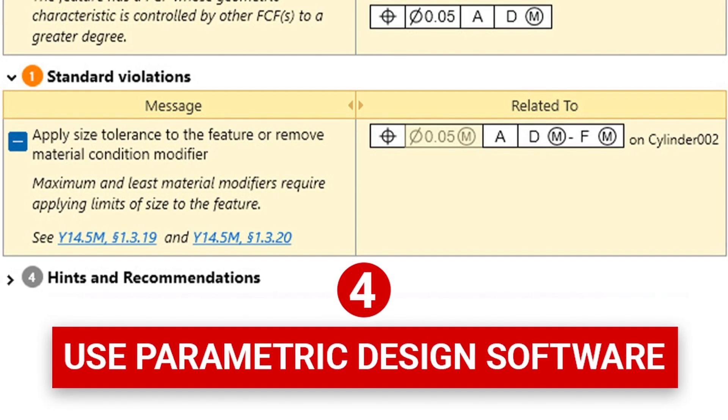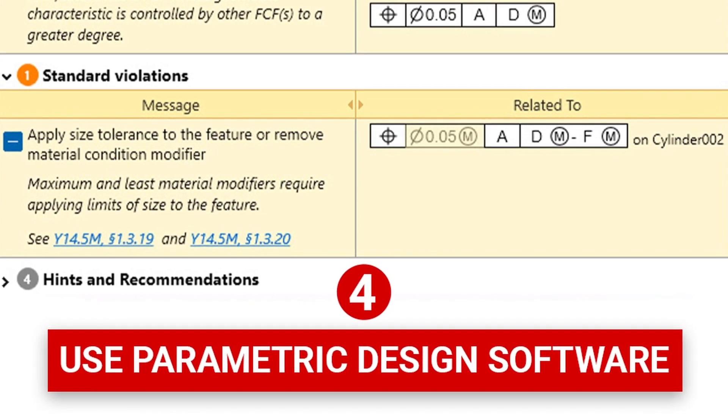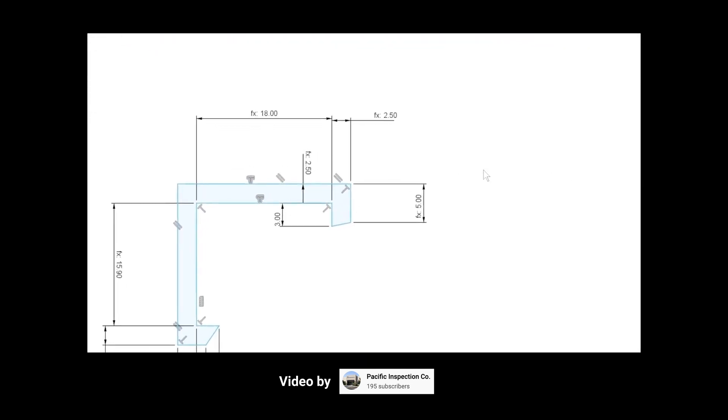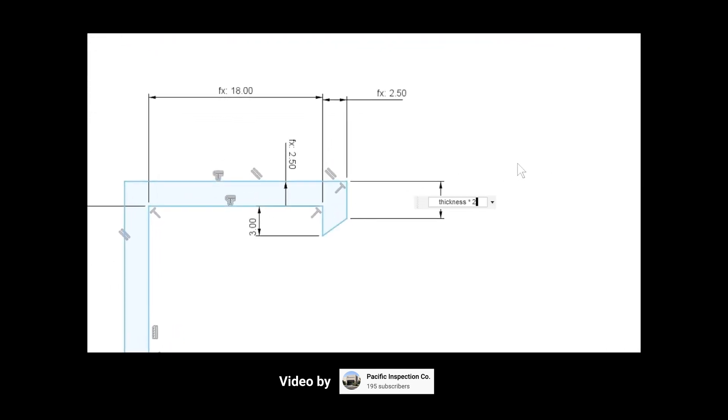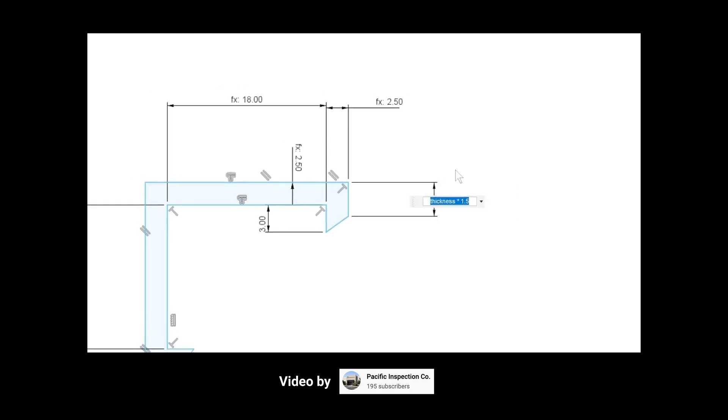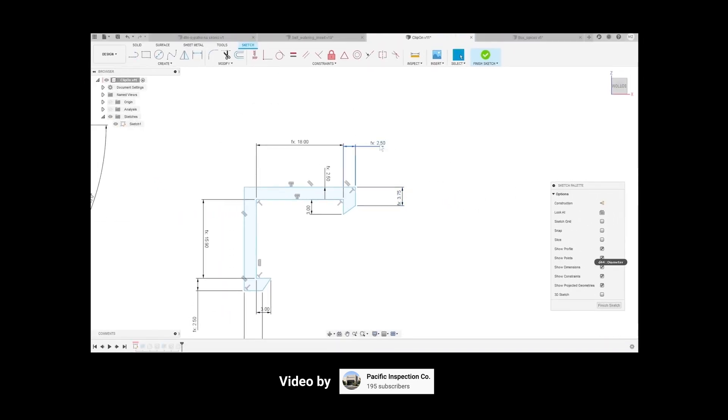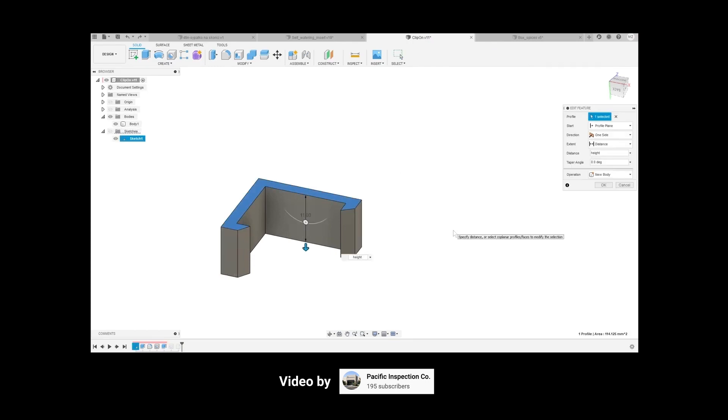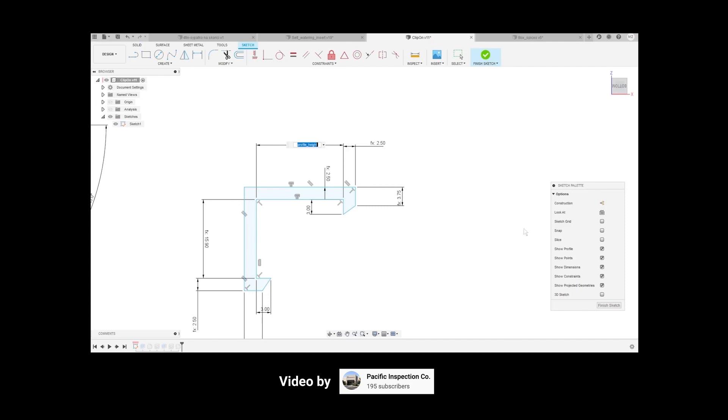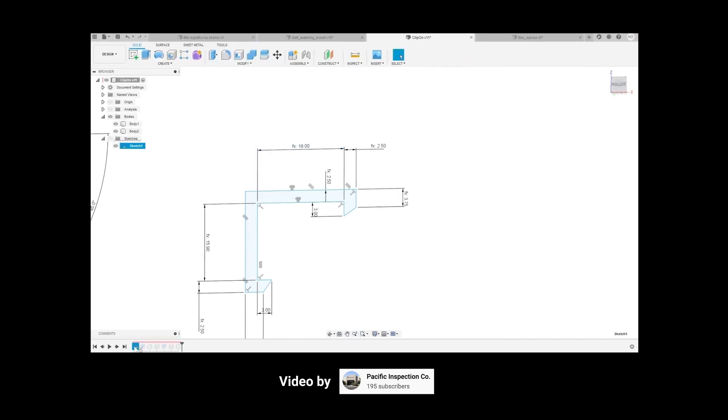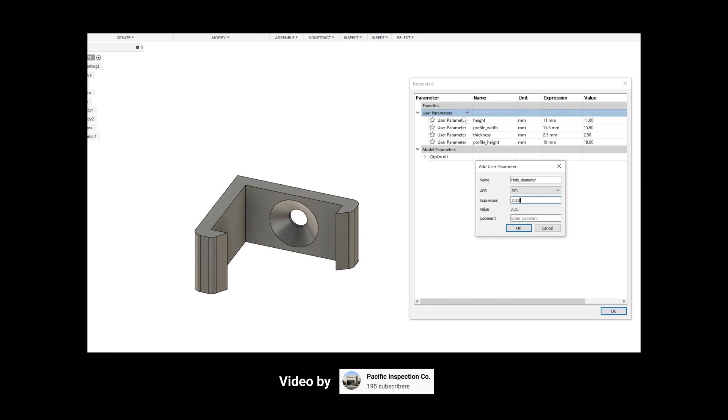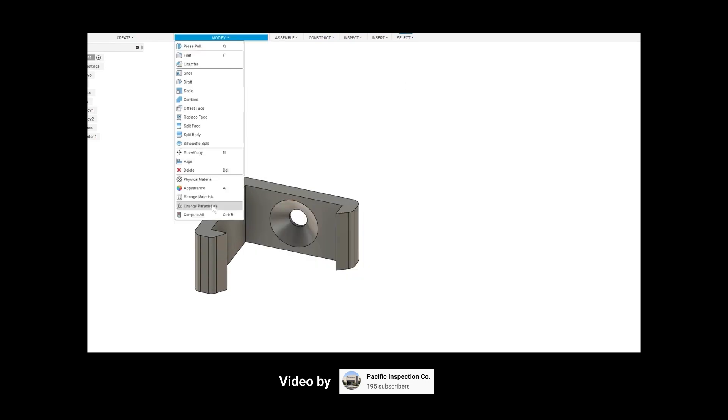Step number four. Use parametric design software. As we mentioned earlier, 2D design drawings are used to record all of the numerical information for a part, but it's the 3D CAD model of that design which is actually used for digital manufacturing. It's essential, therefore, that any changes made to the 2D drawing are accurately reflected in the 3D model. Using the parametric constraints built into the intelligent software, geometric dimensions on a 2D drawing are automatically linked to the 3D model, which is adjusted parametrically.